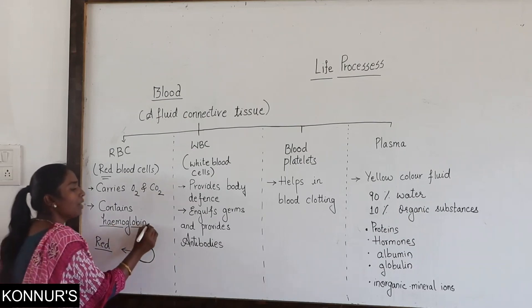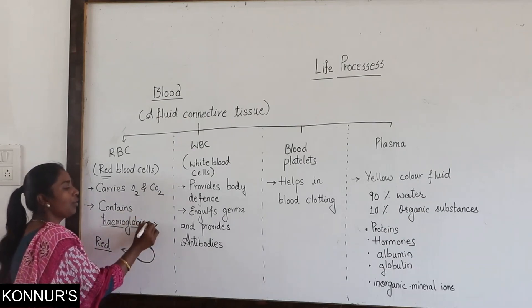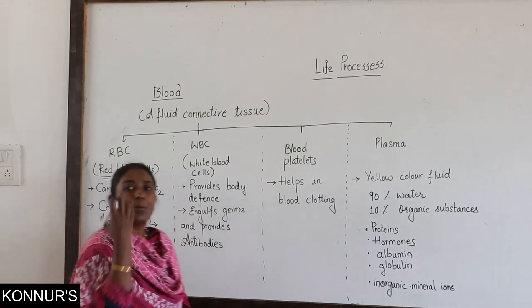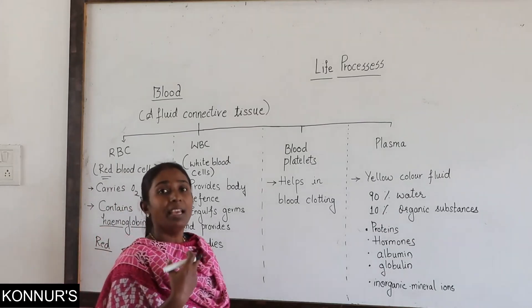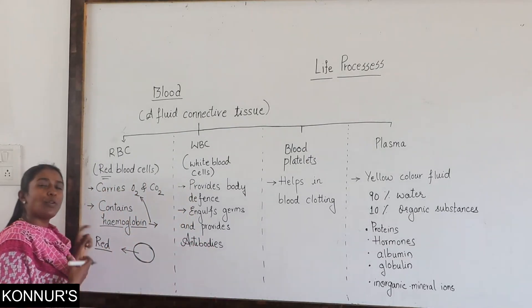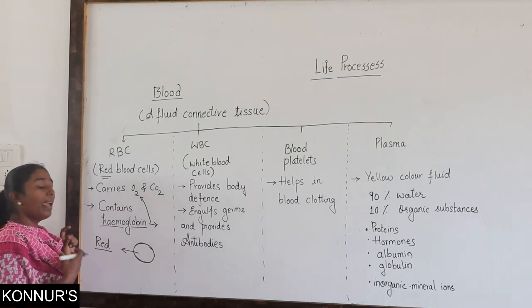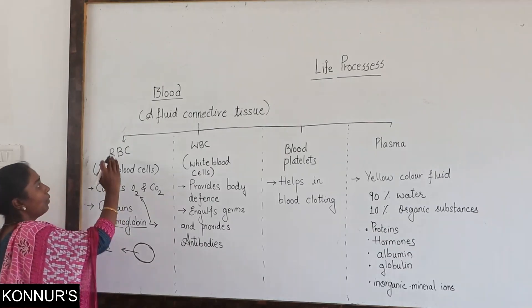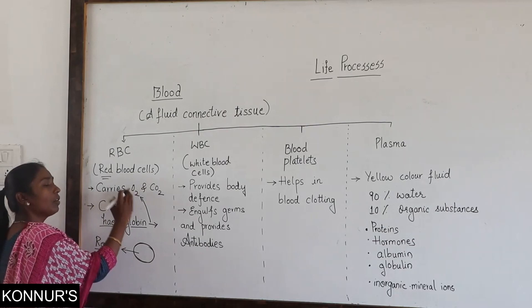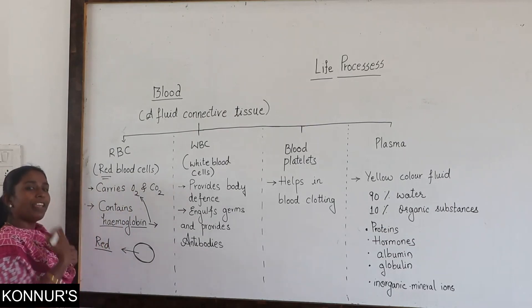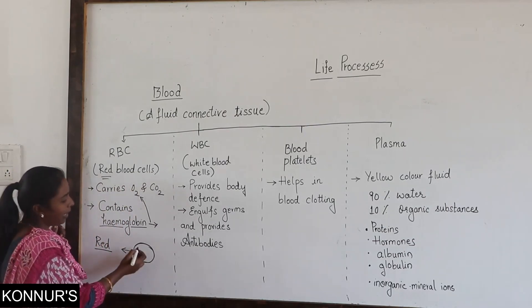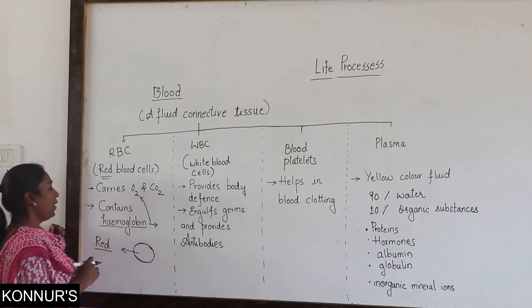What is the function of hemoglobin? The function of hemoglobin is to carry oxygen — the oxygen that we take while inhaling — and this oxygen is used as fuel for the conversion of energy. So the function of RBC is it carries oxygen when we inhale, and when we exhale, we give out carbon dioxide. So it also carries carbon dioxide.